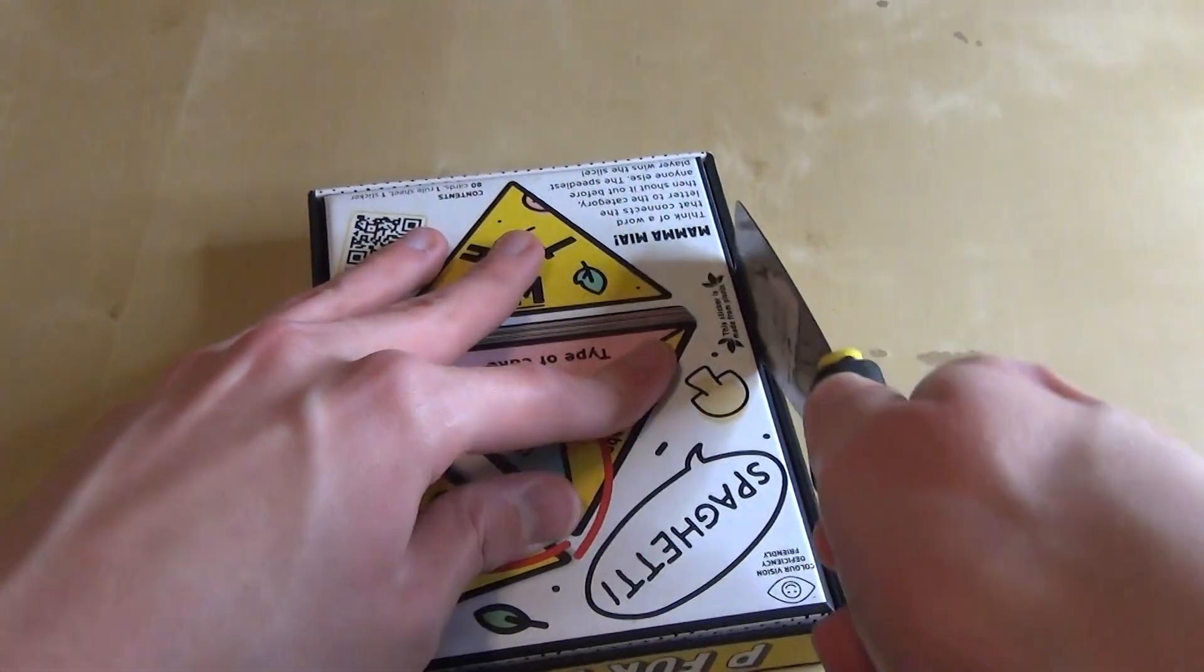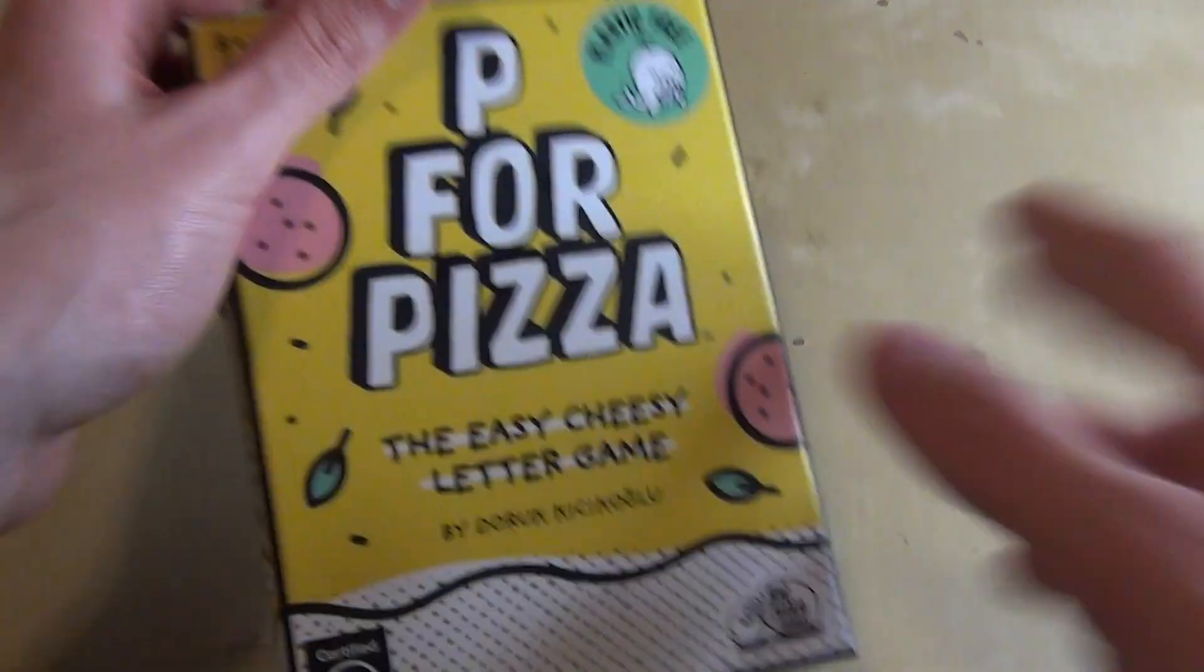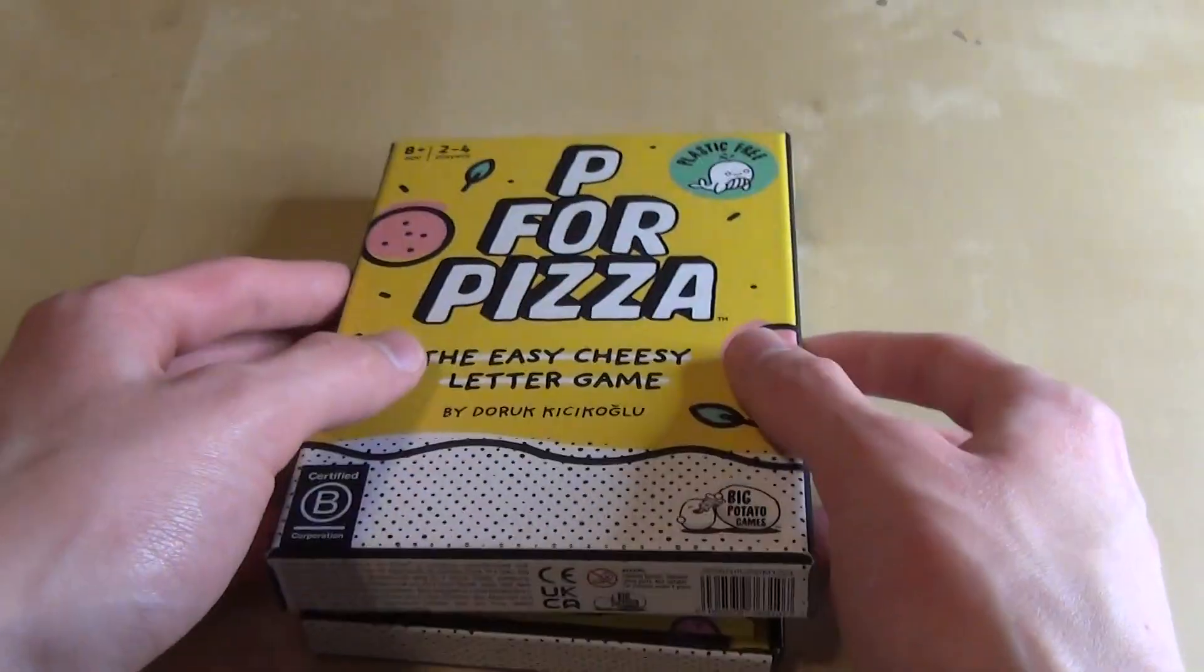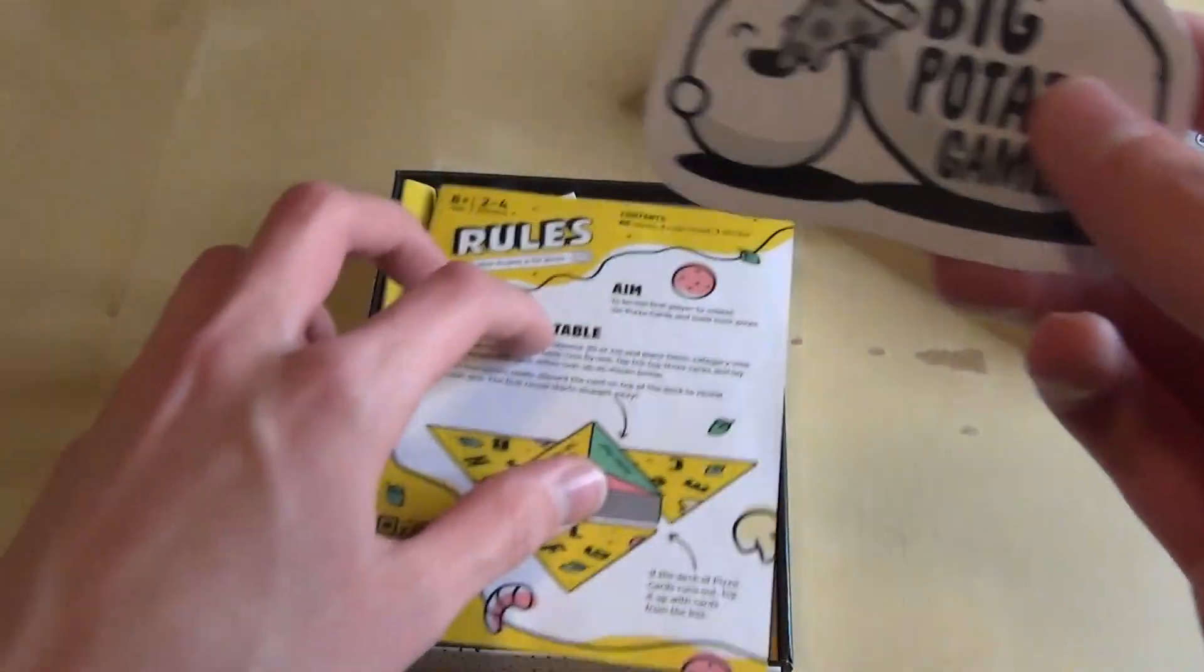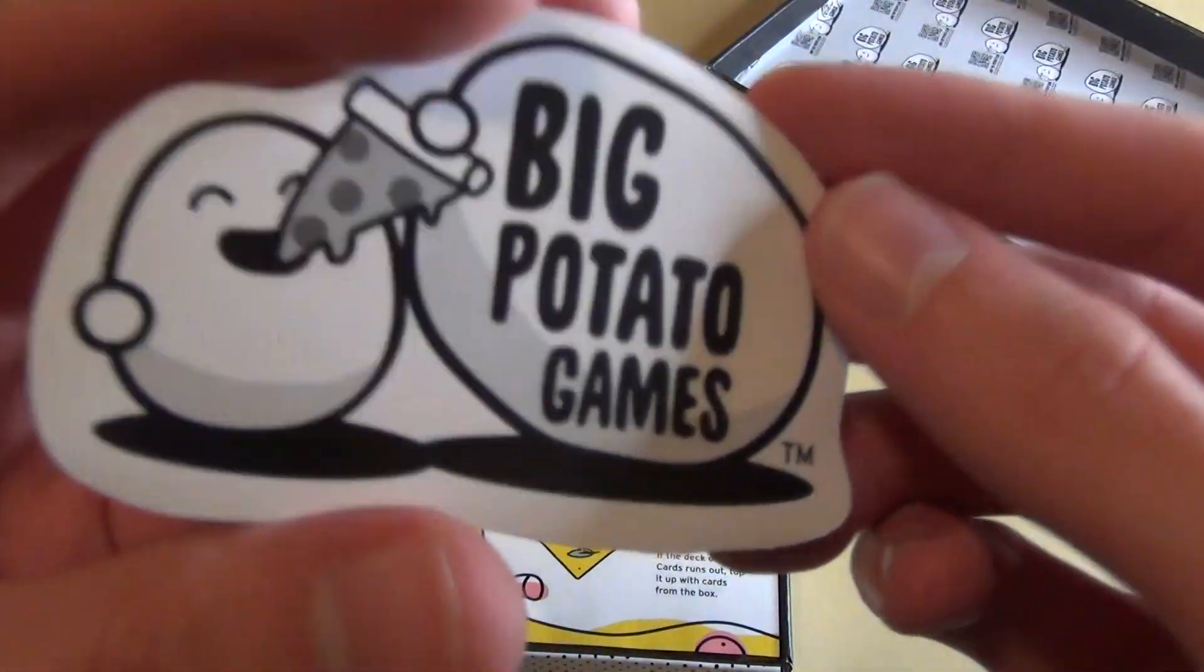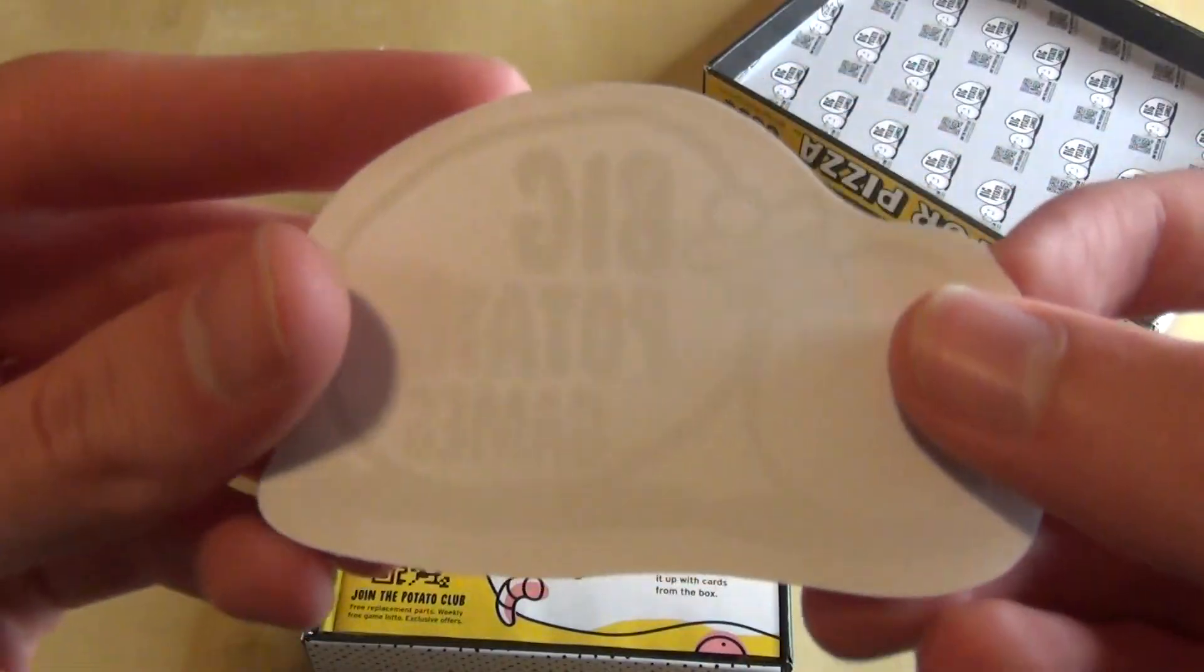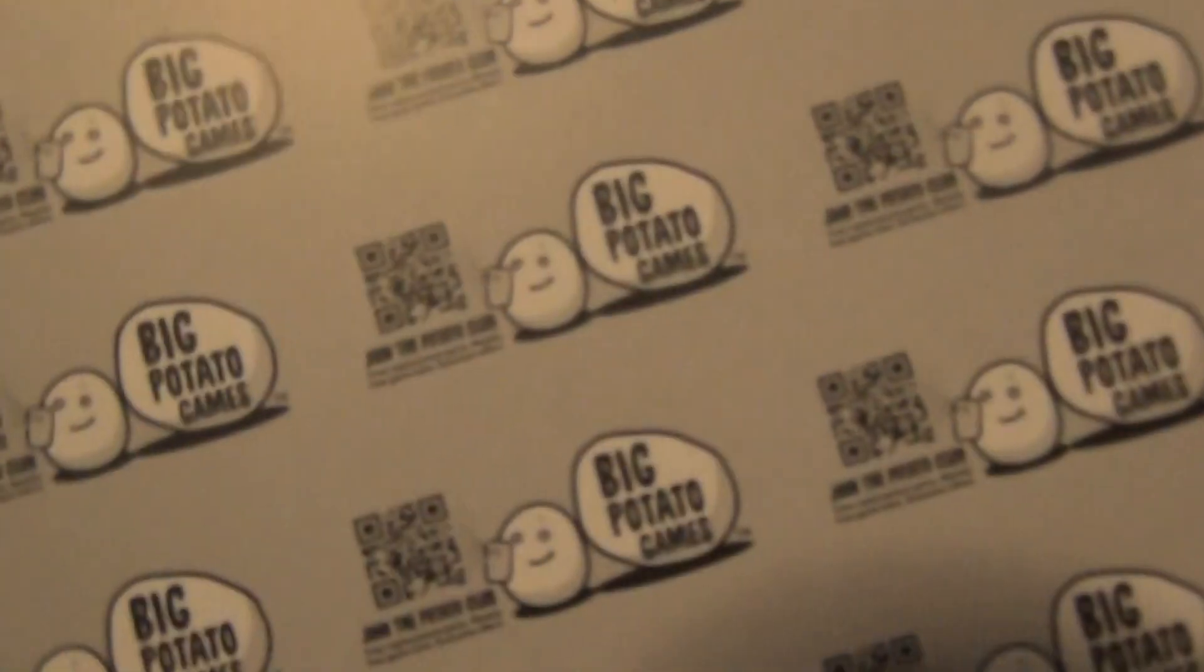Let's open this, so we get our sticker obviously right here of them eating pizza. Thin, as thin all the time - of course it's thin. And then we got Big Potato Games and then we've got the instructions.